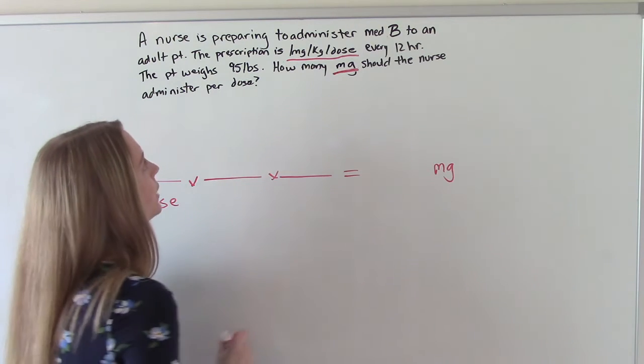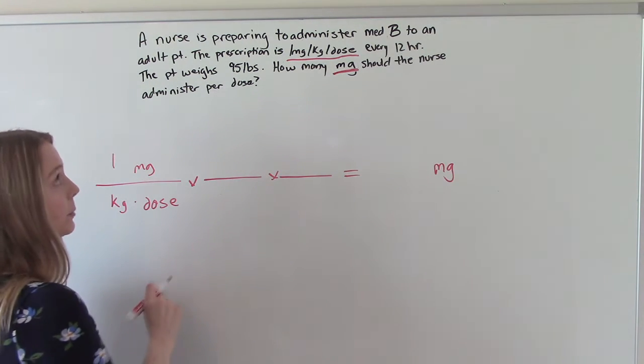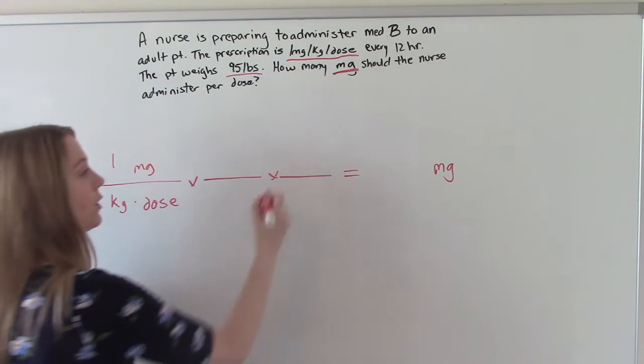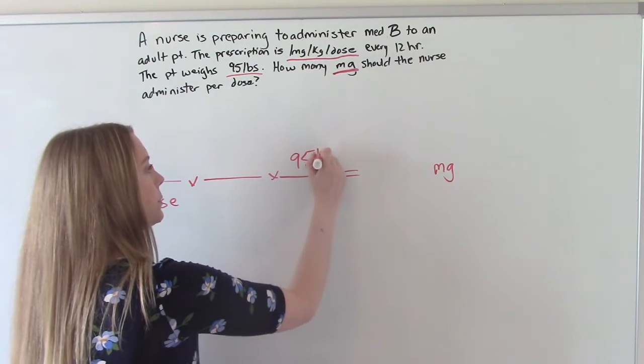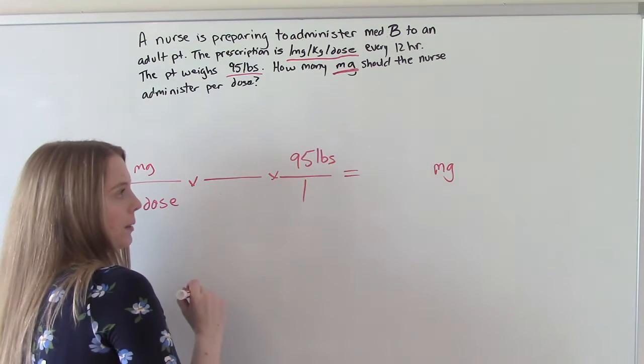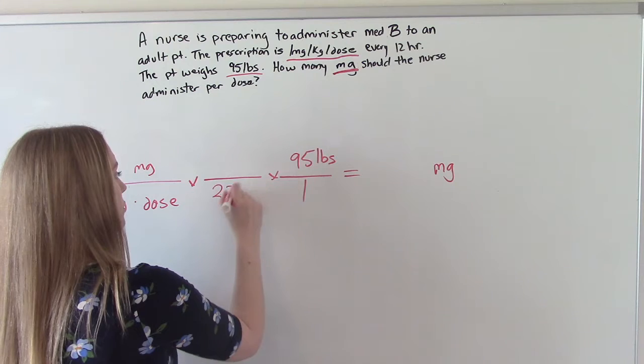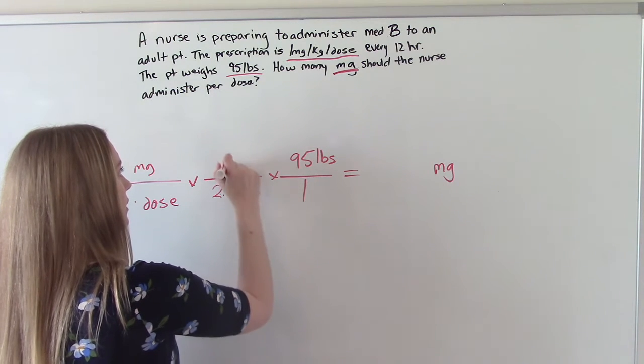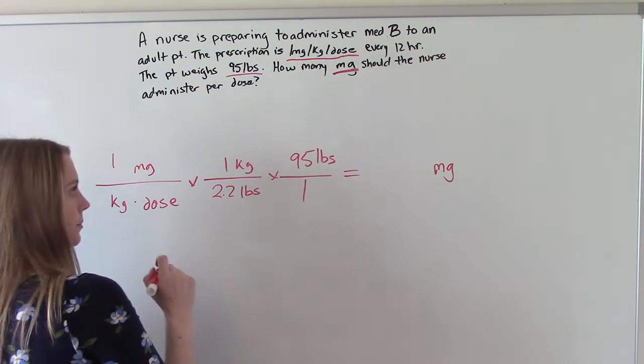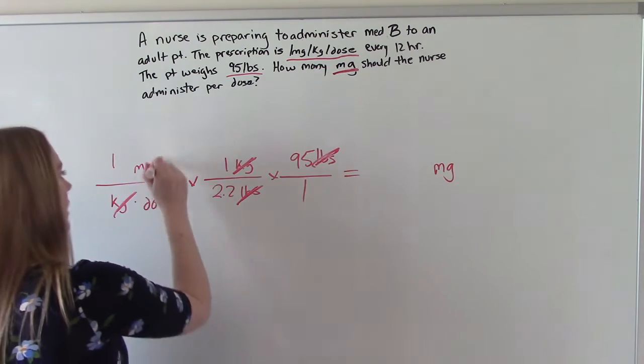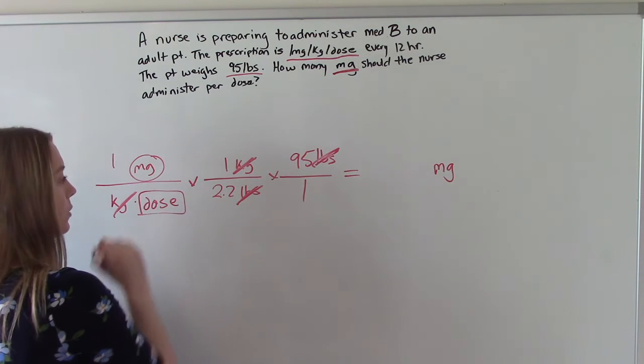What else do we need to put in here? We need to put in a converting factor because we don't have the patient's weight in kilograms, we only have it in pounds. So we'll put 95 pounds up here over 1 and we need to convert pounds to kilograms. So 2.2 pounds is 1 kilogram. So we'll cancel the kilograms out, we'll cancel the pounds out, and then we'll get milligrams over dose.